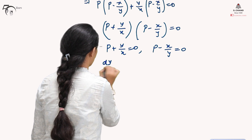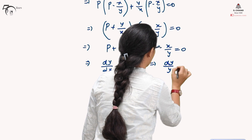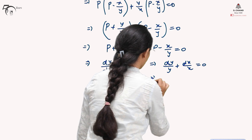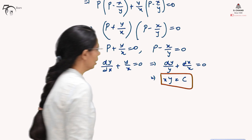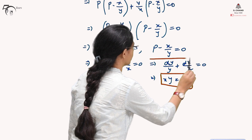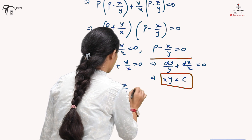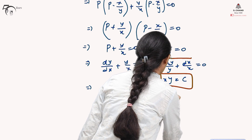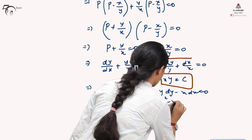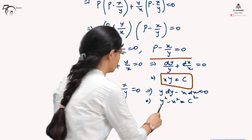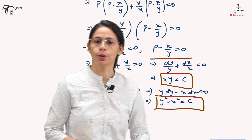Setting each factor to zero gives two first-order first-degree equations. From p + y/x = 0, i.e., dy/dx + y/x = 0, we get dy/y + dx/x = 0, whose solution is xy = constant. From p − x/y = 0, i.e., dy/dx − x/y = 0, we get y·dy − x·dx = 0, and upon integration, y² − x² = c². These are the two solution parts of the given differential equation.